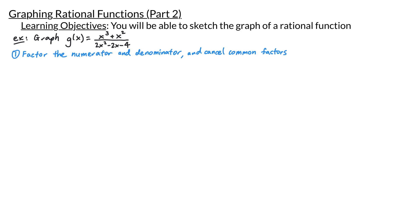Our first step is to factor the numerator and denominator and cancel out any common factors. Looking at the numerator, we'll see that there's a common factor of x squared between the two terms. If I have x cubed and divide by x squared there's just an x remaining, and x squared divided by x squared leaves just one. So our numerator factors as x squared times x plus 1.